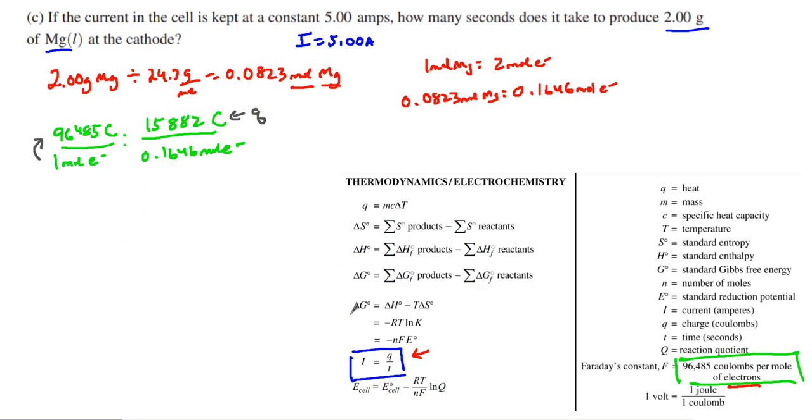Now I have the coulombs. That's my Q in this equation right here. That's my Q in this equation. I have my I, which means I can know what T is. I is equal to Q over T. I have 5.00 amps, and that's equal to 15,882 coulombs for every bit of time.